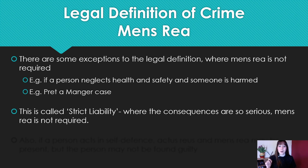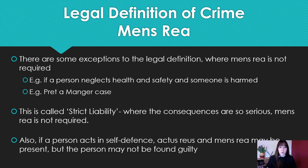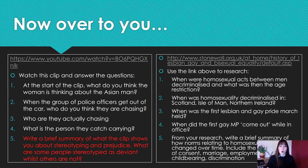This is called strict liability — where the consequences are so serious, mens rea is not required. In that situation, there was no intention, no mens rea, but it's still something to be taken so seriously because somebody has died. Also, if a person acts in self-defence, actus reus and mens rea may be present, but the person may not be found guilty. That's the first part, and that should take you your first lesson, with these two activities.